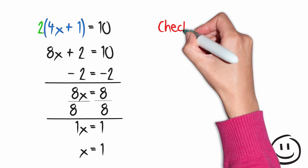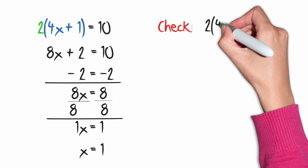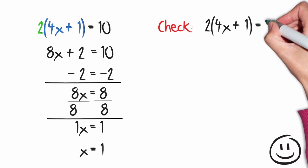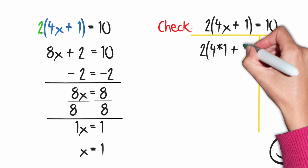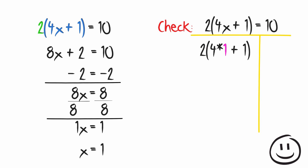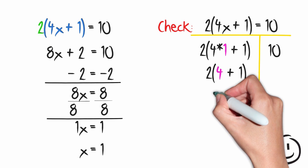Now let's check the problem. The original problem said 2 times the quantity 4x plus 1 is equal to 10. We said that x was equal to 1. So we will substitute 1 everywhere we see the x. So that's 2 times the quantity 4 times 1 plus 1 or 2 times 5.